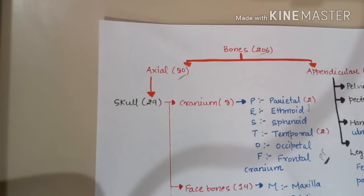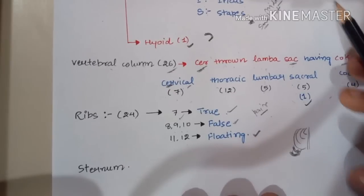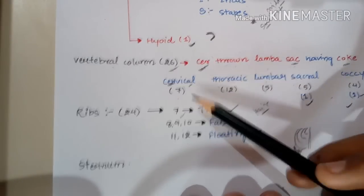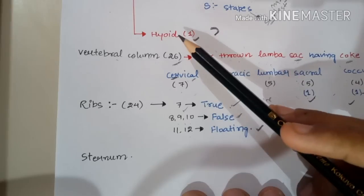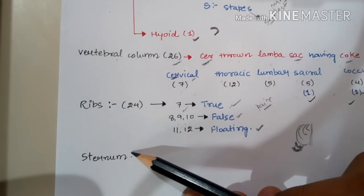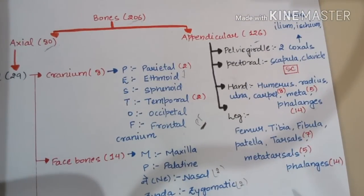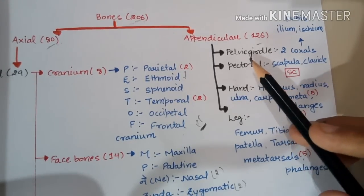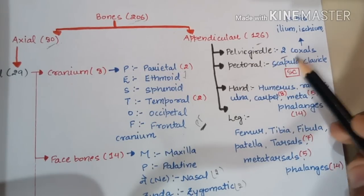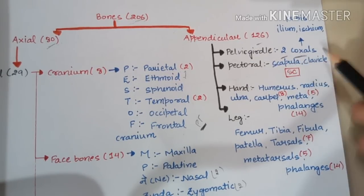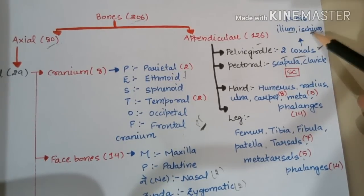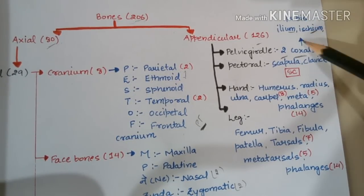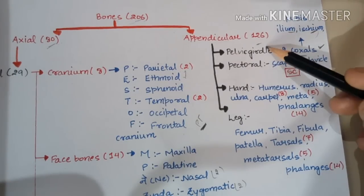So skull has 29 bones, vertebral column 26, ribs 24, plus sternum — these make up the axial skeleton's 80 bones. Now for the appendicular skeleton: the pelvic girdle is formed by two coxals. Each coxal is made of three bones — Ilium, Ischium, and Pubis.